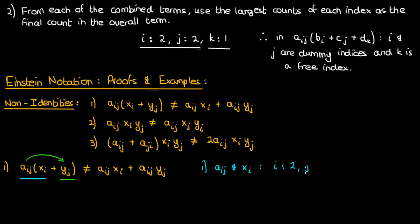But in the second combination i occurs once and j occurs twice. The largest count of i from both of these combinations is 2, while the largest count of j is also 2. So therefore, the overall count is 2 for i and 2 for j, which means that i and j are both dummy indices on the left-hand side.